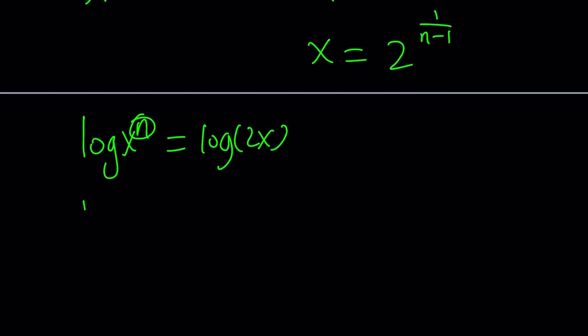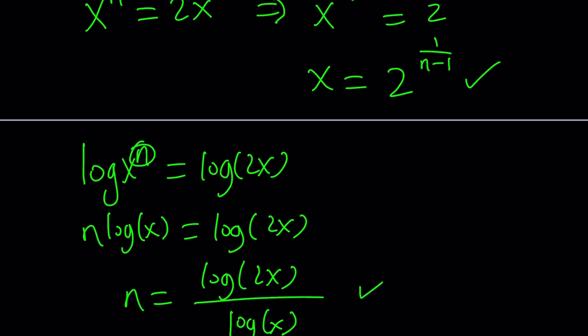you can move the n to the front and log x equals log 2x. And then from here, n equals log 2x divided by log x. What's the difference? We're solving for x here. We're solving for n here. So that's the difference. Make sense?